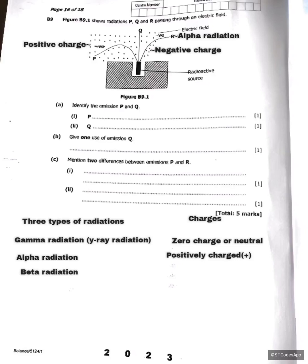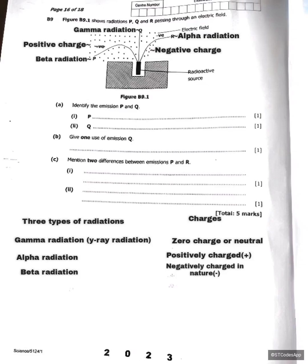Gamma radiation has no charge and is not affected by a magnetic field or electric field, so gamma radiation travels in a straight line — therefore Q is the gamma radiation. As for P, beta radiation is negatively charged in nature. Because beta particles are negatively charged, there will be attraction between P and the positive charge, so P is the beta particle.